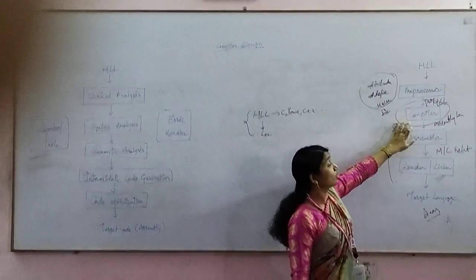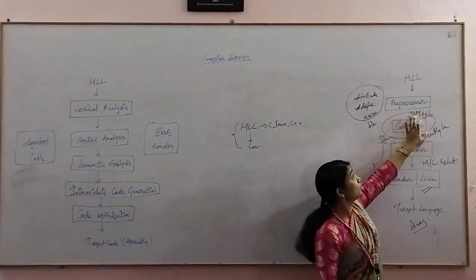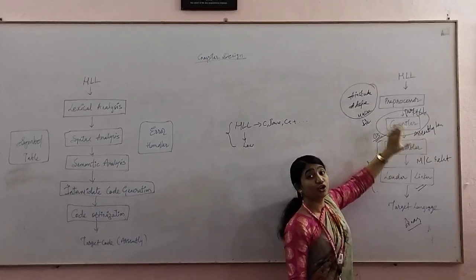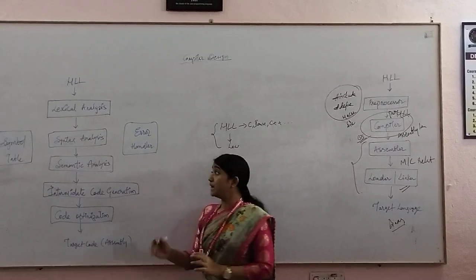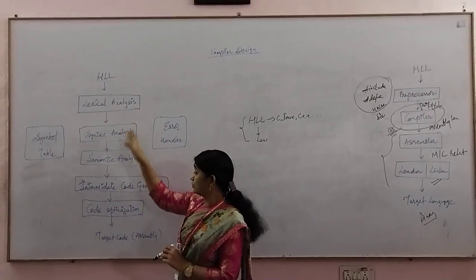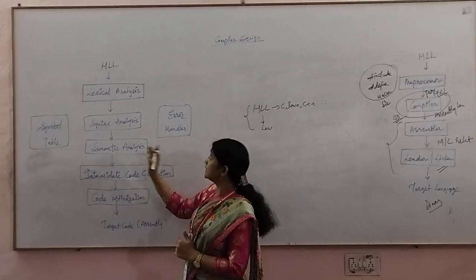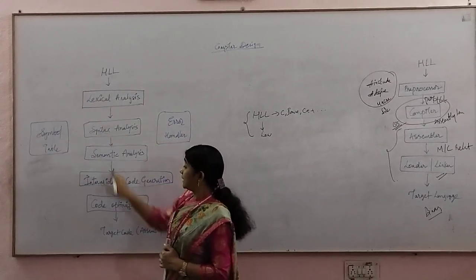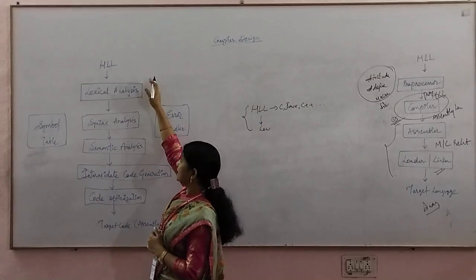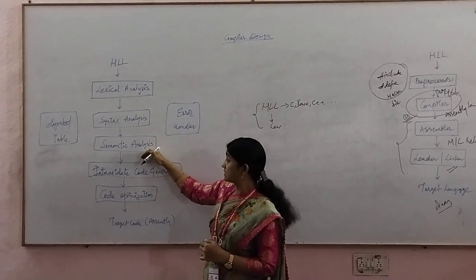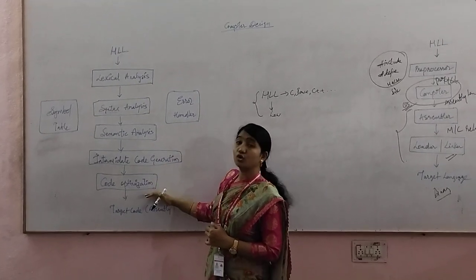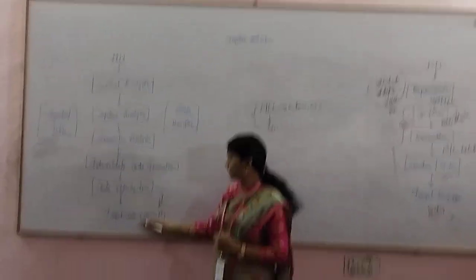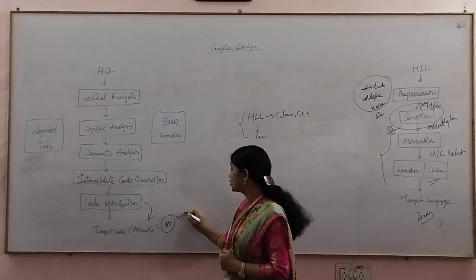In our compiler design course, we are focusing on the compiler software module. The compiler takes pure high level language as input and converts it into assembly language. To do that, the compiler moves through 6 different phases and converts into target code, which is assembly language. The 6 phases are: lexical analysis, syntax analysis, semantic analysis, intermediate code generation, and code optimization. The code optimization phase converts into assembly language based on the operating system the user is using.